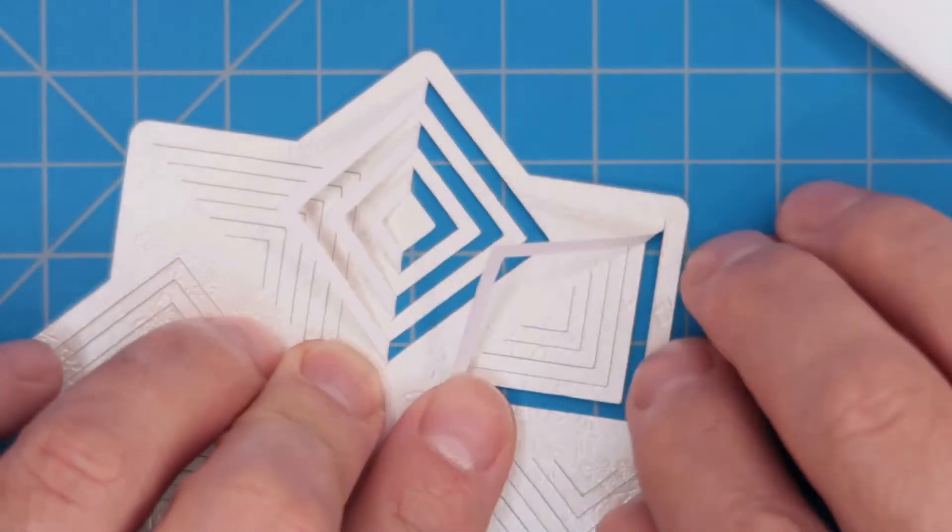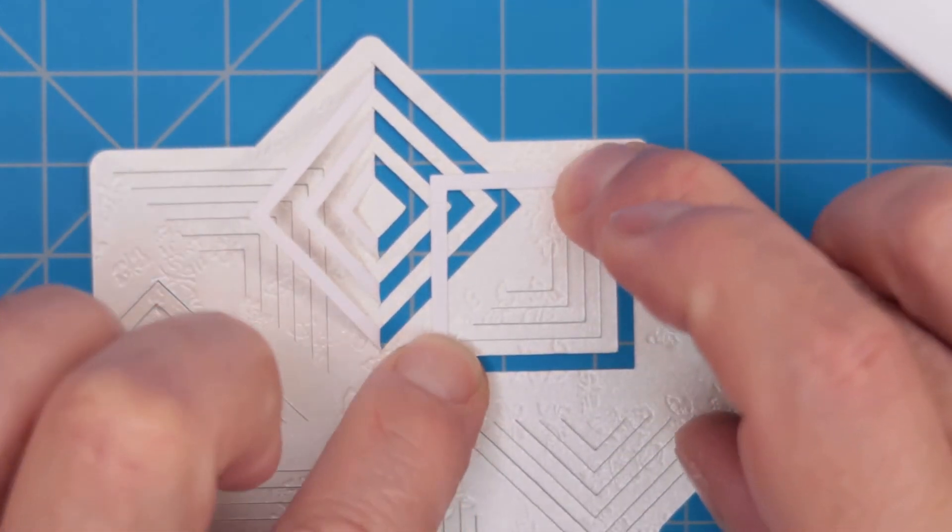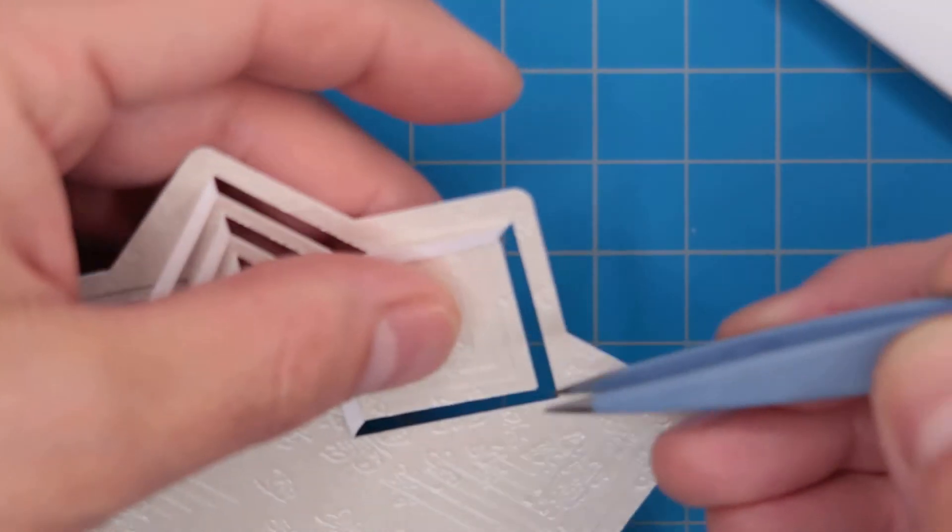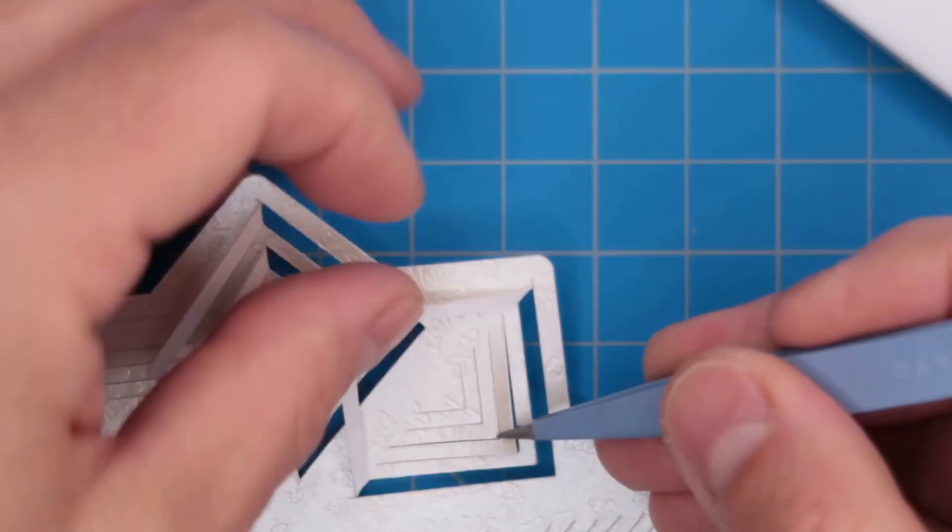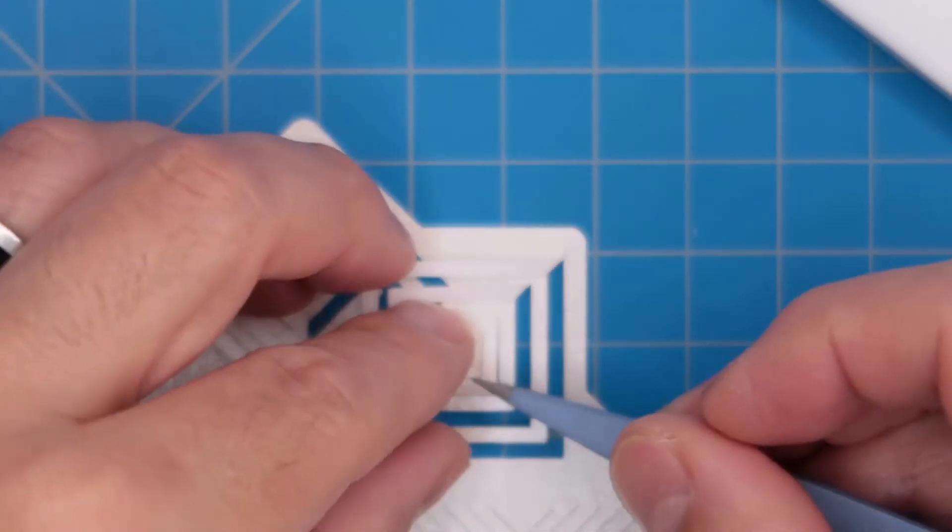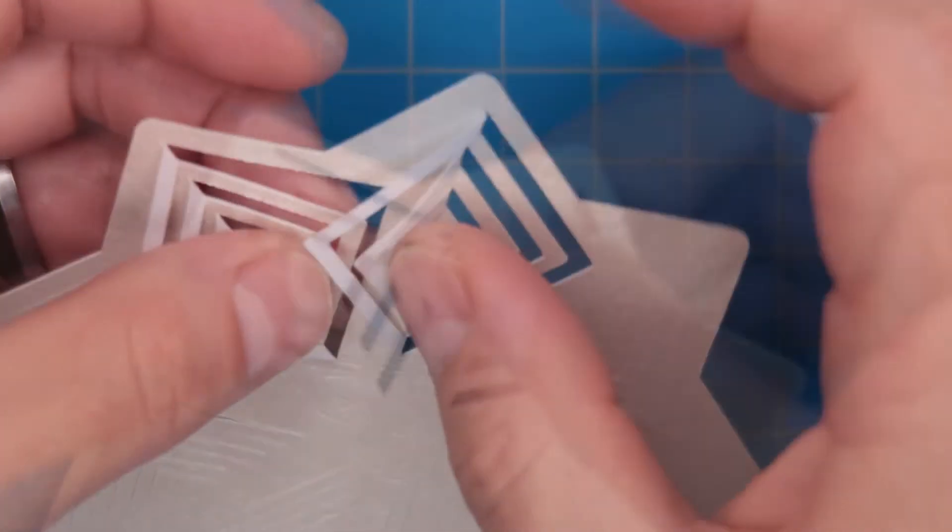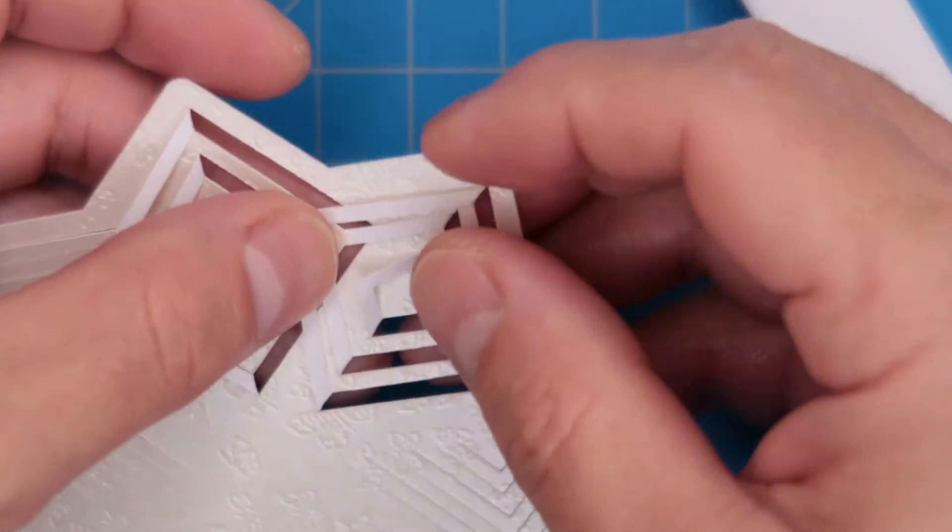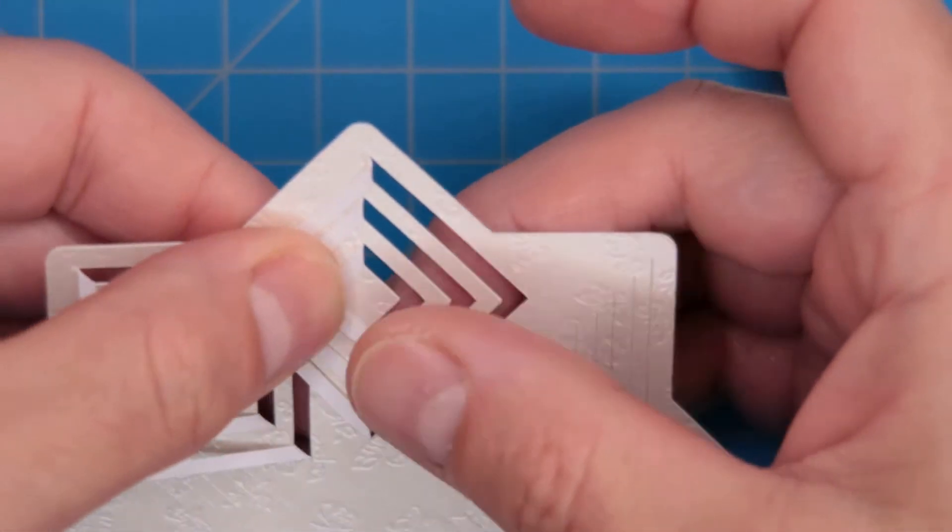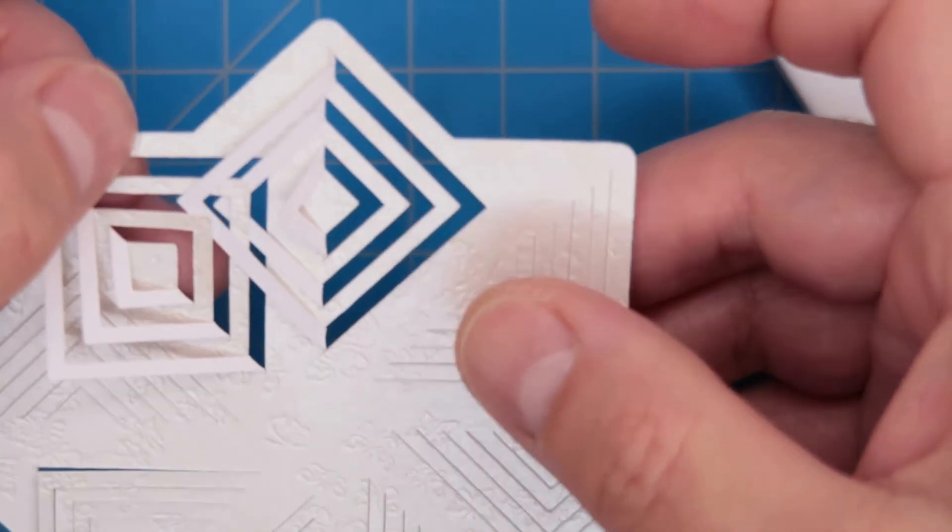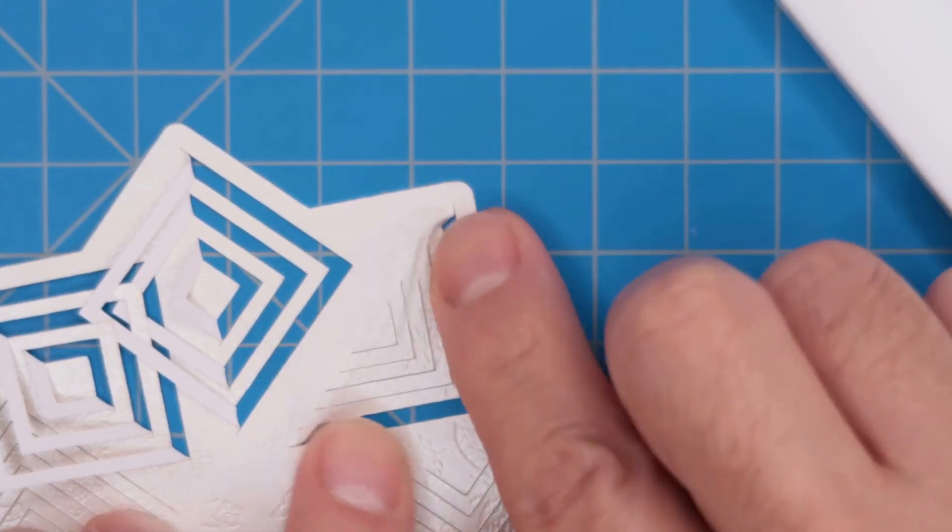Next, take the next section and do the same thing that we did with the previous one. Fold the largest flap, the first one, fold the third and the fifth one. And next, start braiding the sections. Put the third flap underneath the second one of the previous section and the third one underneath the fourth of the flaps of the previous section. Repeat the same process all around.